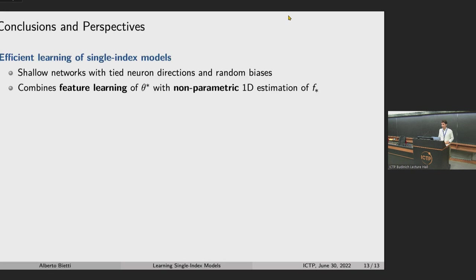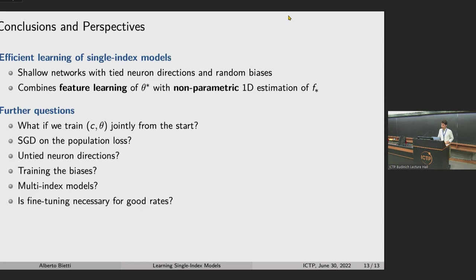To conclude: we achieve efficient learning of single-index models using a tied-direction architecture where all neuron directions are tied together and biases are random. That's enough to do feature learning and learn the 1D function, combining to give the right statistical guarantees. Open questions include: training C and theta jointly from the start; untied neuron directions; training biases; multi-index models; and whether fine tuning is necessary.